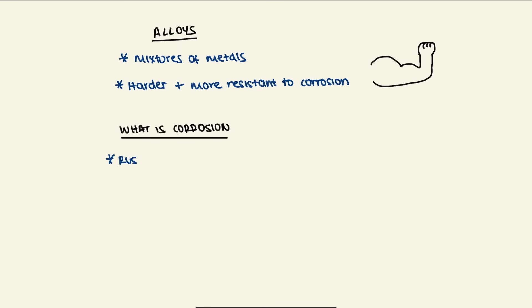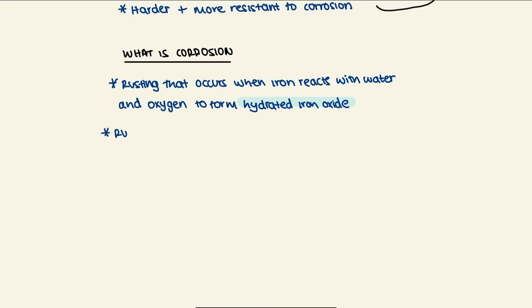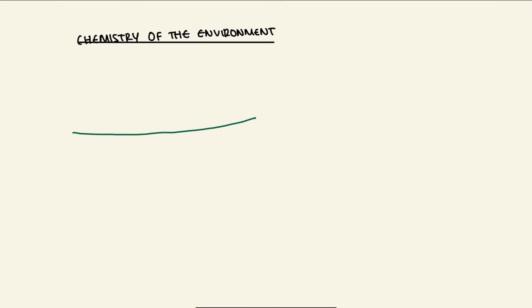What is corrosion? Corrosion is rusting that occurs when iron reacts with water and oxygen, forming hydrated iron oxide. Rust can be prevented using barriers or sacrificial protection.